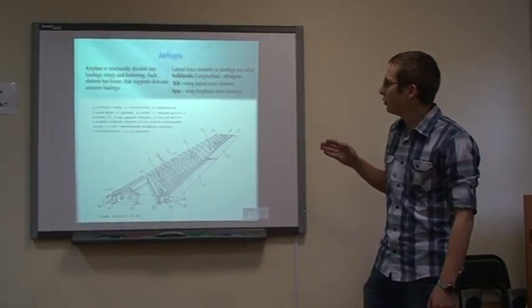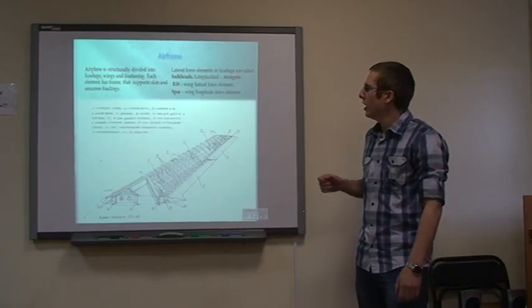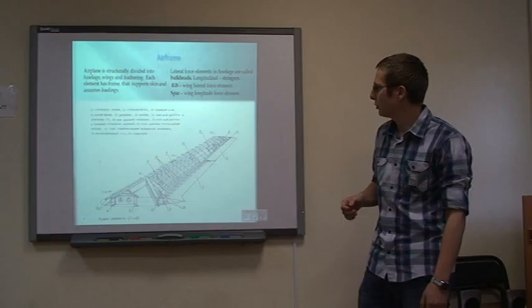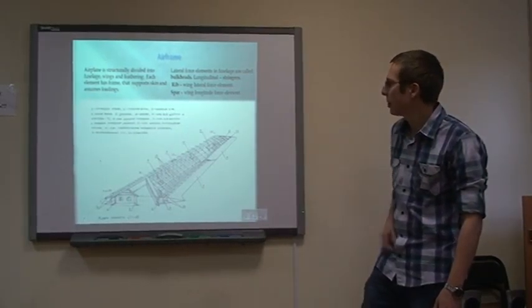On this picture you can see such element like rib, it is a wing lateral force element. Spar is wing longitude force element. You can see stringers here on the picture.